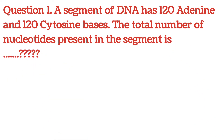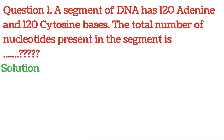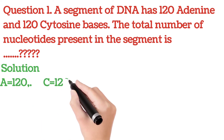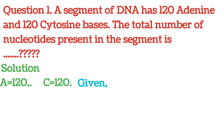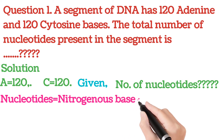Question number one: A segment of DNA has 120 adenine and 120 cytosine bases. The total number of nucleotides present in the segment is — what? Now we'll try to solve this. Number of adenine is given as 120 and number of cytosine is also given as 120. You are asked to find out the number of nucleotides using only this information.